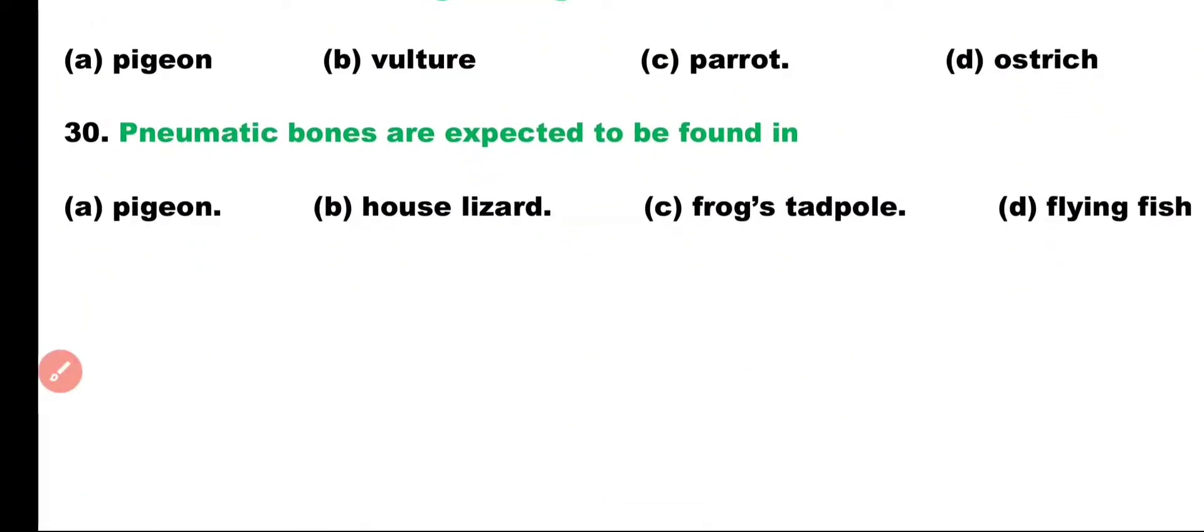Question number 30. Pneumatic bones are expected to be found in: pigeon, house lizard, frog, or flying fish? Correct answer is Option A. Pneumatic bones are present in birds. Pigeon is a bird, and it has pneumatic bones present, which play an important role in flight.